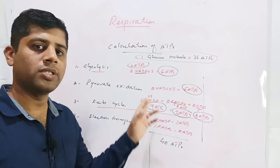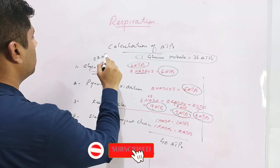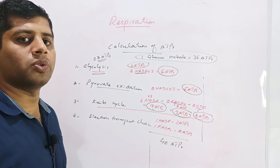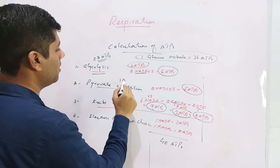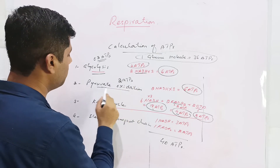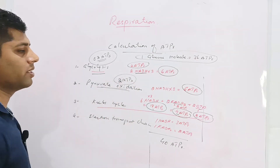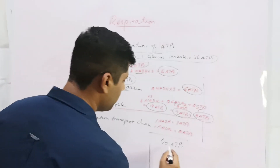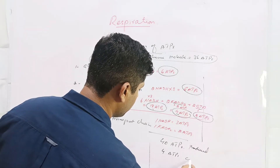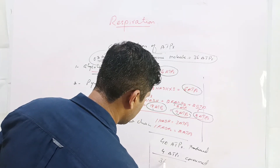Now for the ATPs consumed during these reactions: glycolysis used two ATPs, and during pyruvate oxidation, when the pyruvate molecule entered from the cytosol to the mitochondria, each pyruvate consumed one ATP and there were two pyruvate molecules, so two ATPs were consumed. Total ATPs consumed were four. Therefore, 40 ATPs produced minus 4 ATPs consumed gives a net of 36 ATPs.